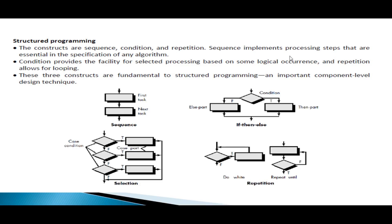In procedural design, first there is structured programming. As you know, C is a structured programming language. You can structure one construct in a sequential order. The second construct is selection. The third construct is repetition, which is looping statements. So, based on a condition, statements are repeated and executed.